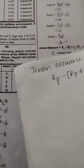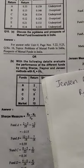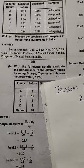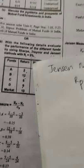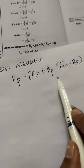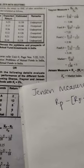Hello everyone. As we have done in the last problems with two methods already, now we'll be doing Jensen method. The Jensen method formula is Rp minus [Rf plus βp into (Rm minus Rf)].